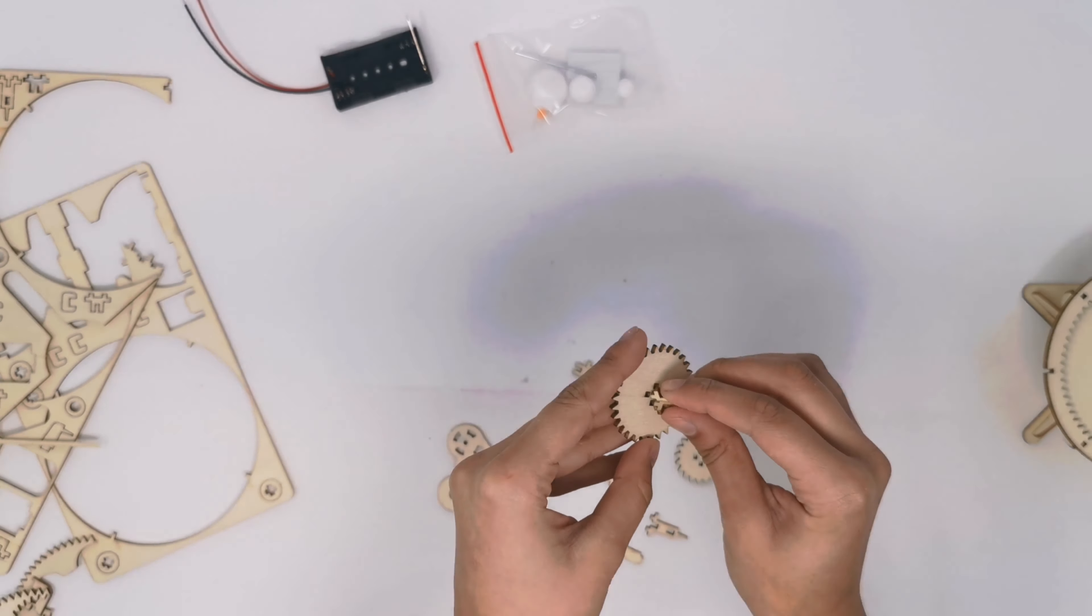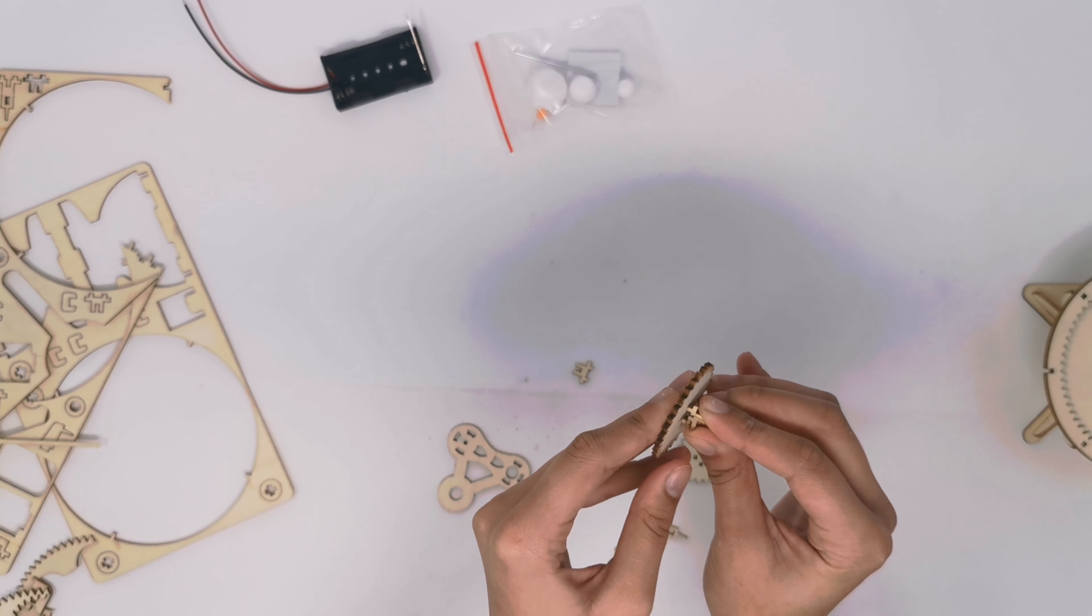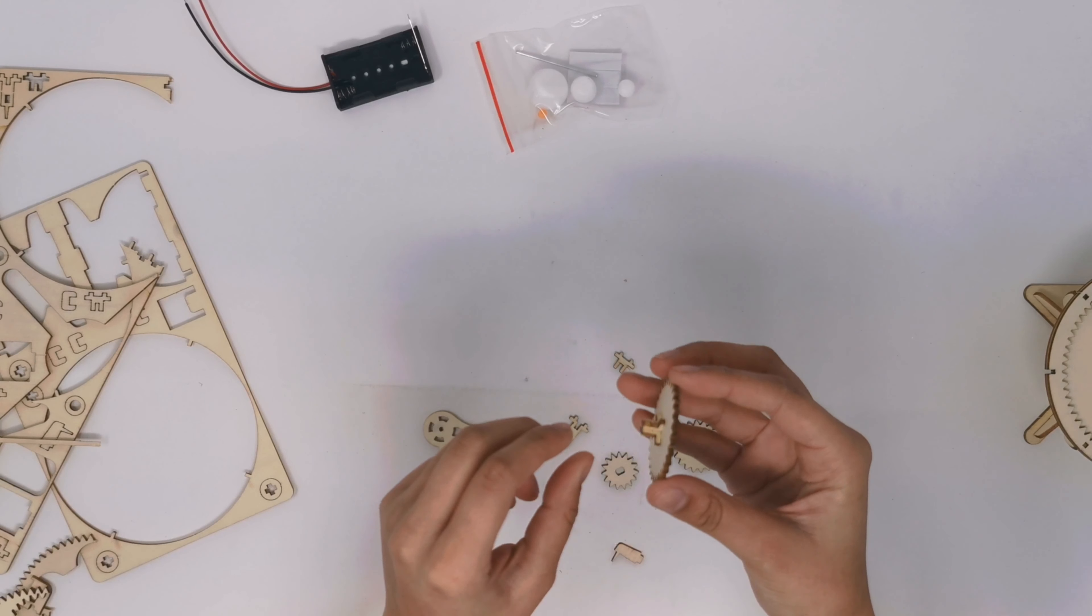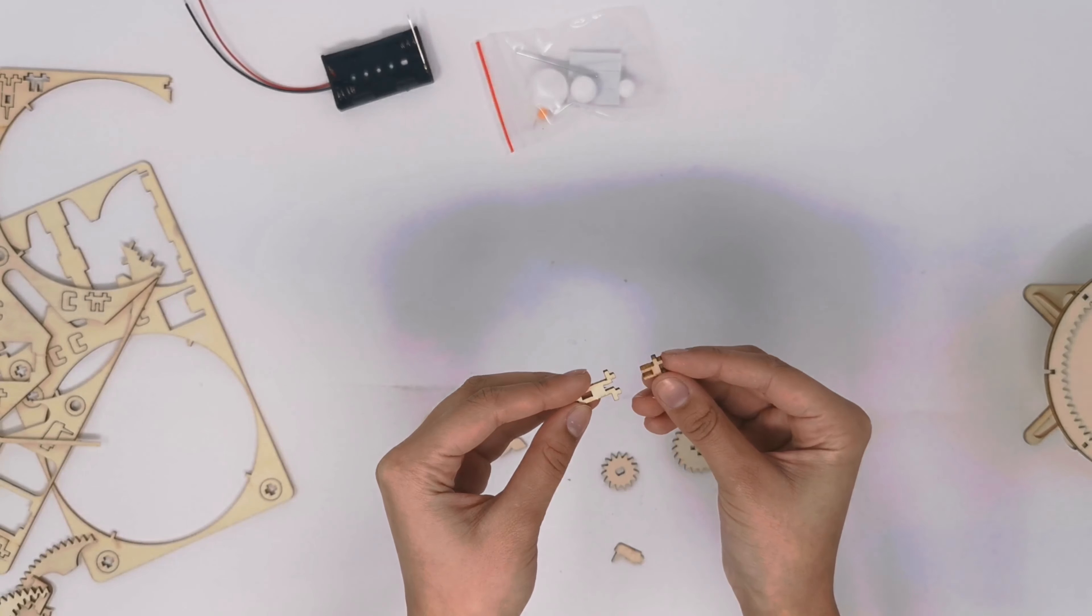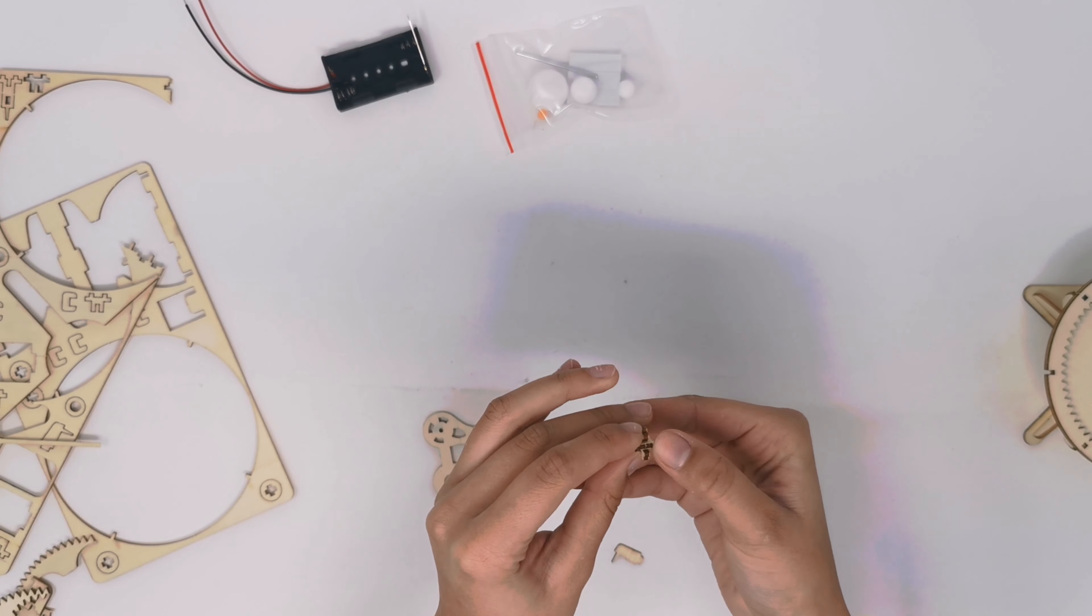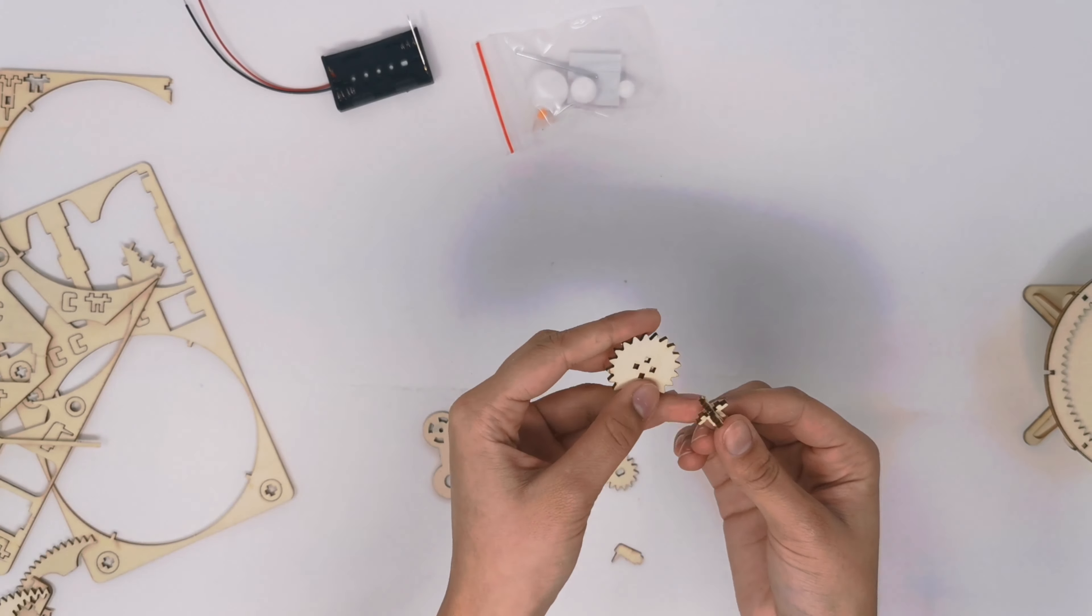Next, you want to take the four prongs that are sticking out and add it to the larger gear. Once you have that all together, you can take your two other components that look similar, but this smaller one has a point on the edge for styrofoam balls. Once you get that piece snug in, you want to add it to your smaller gear.